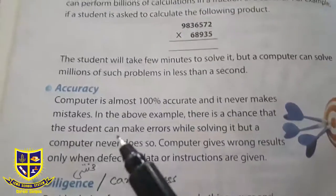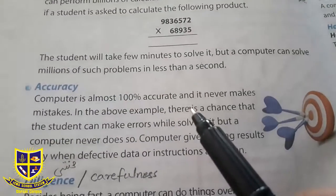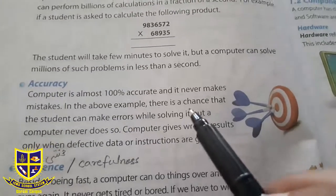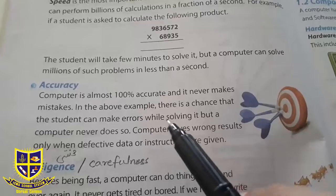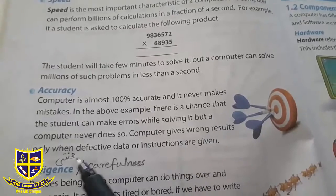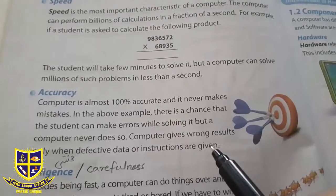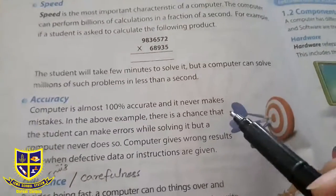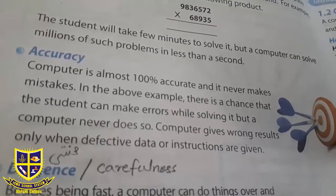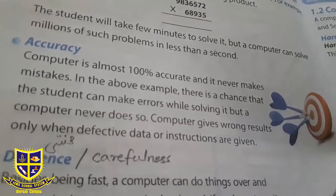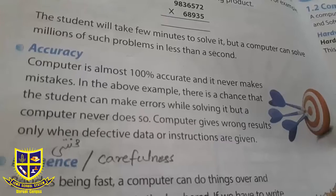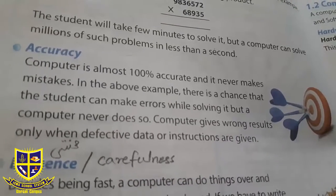Accuracy — computer is almost 100% accurate and it never makes mistakes. In the above example, there is a chance that students can make errors while solving it, but a computer never does so. Computer gives wrong results only when defective data or instructions are given. Computer कभी भी mistake नहीं कर सकता क्योंकि वो machine है। जब आप wrong या defective data या instructions देते हैं, तो obviously उसका जवाब गलत आएगा।